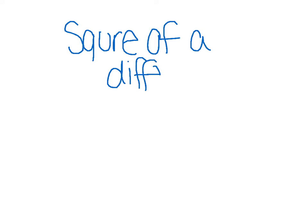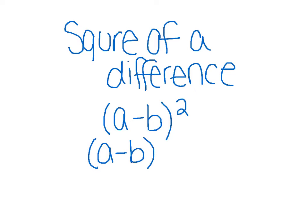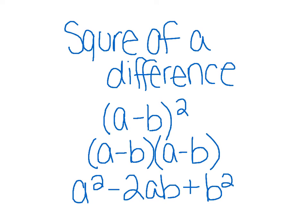The other formula is called a square of a difference. It's essentially the same idea as a square of a sum, but instead of adding, we've got subtracting. We have a minus b squared. This is the same thing as a minus b times a minus b, and it fits into the pattern of a squared minus 2ab plus b squared. It's exactly the same as the previous formula, but instead of a plus, we have a minus.